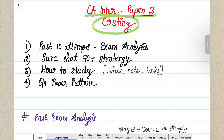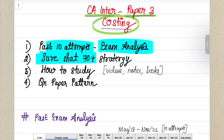This video is going to be the most beneficial video out of all the other videos you are going to see on the internet, because in this video we have covered around past 10 attempts of question papers and made an exam analysis out of it. Based on the past 10 attempts and along with your ICAI weightage, I have come up with Category A chapters — the most important chapters which will sure-shot give you 70 plus in your examination. Watch till the end to get the most benefit out of this.